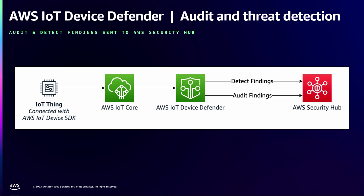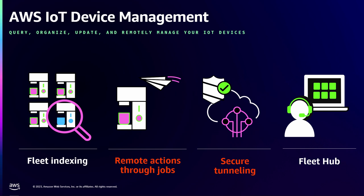When you do find alerts — either through audit or detect — it is possible to send these alerts to Security Hub, a service where you can get a comprehensive view of security in your environment. One mitigation action could be pushing a software update to these IoT devices, using AWS IoT Device Management jobs capability. You may also want to securely connect to a device that may be behind firewalls for troubleshooting — using AWS IoT Device Management secure tunneling in order to securely connect to devices behind firewalls for remediation.